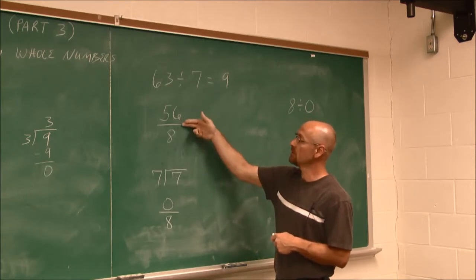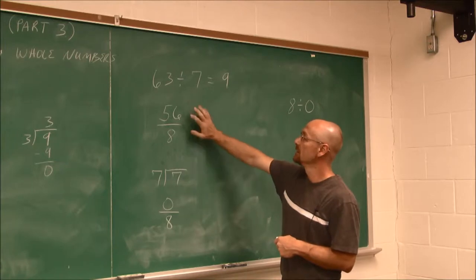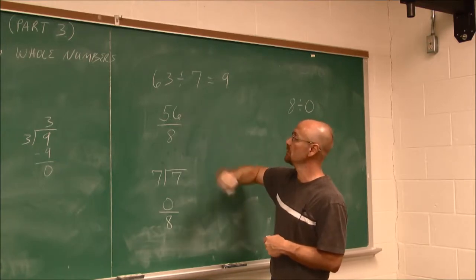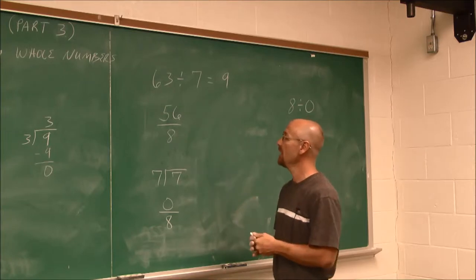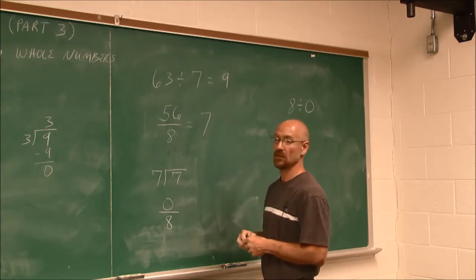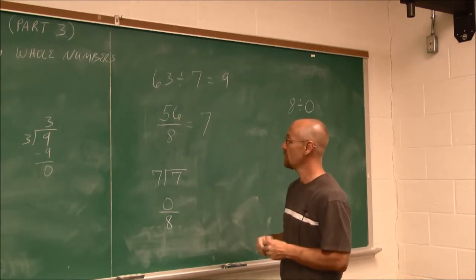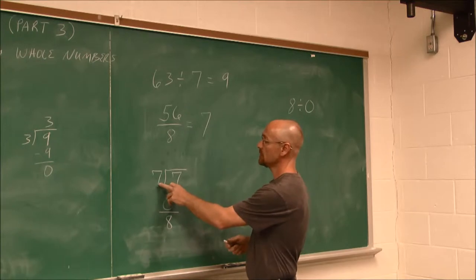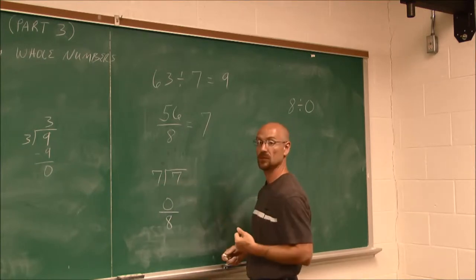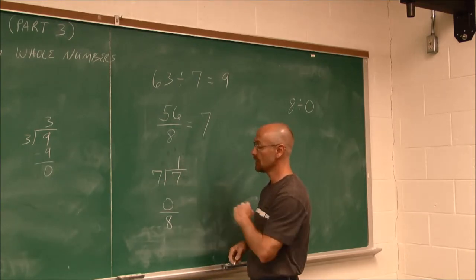56 divided by 8 — even though it's written as a fraction, we realize that the bar just means division. 56 divided by 8: 8 can be subtracted from 56 seven times. 7 times 8 is 56, so we can check that work. Now here, 7 goes into 7: how many times can I subtract 7 from 7? Just once, because 1 times 7 is 7. 7 minus 7 leaves 0.